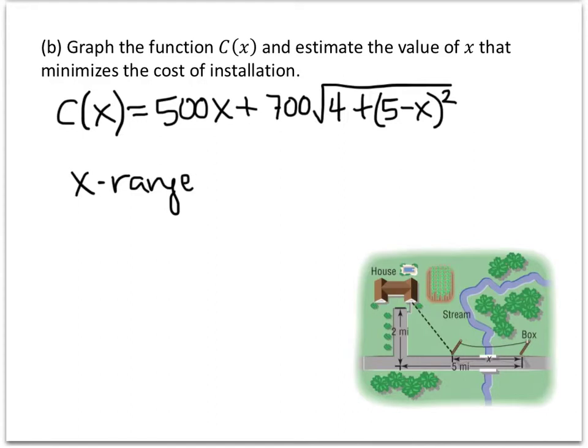So the x on our picture is this distance, the distance from the box to the point where we start digging our cable underground. So since that x is a distance, it can't be negative. So we know that at the very least, x has to be bigger than or equal to 0. But how big could x be? Well, x could be as big as 5 miles. We could keep running our cable along the road until we get to the driveway of this person. And I suppose that we could keep going and build our cable like this so that it goes past the driveway and then goes back to meet up with the house.